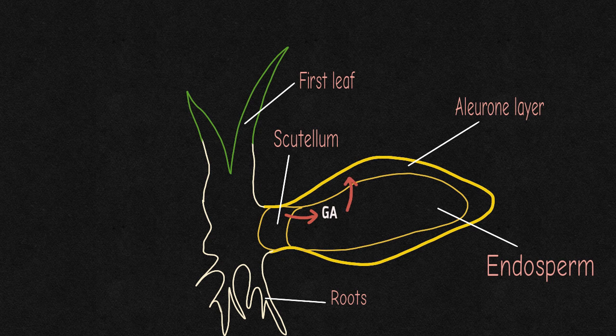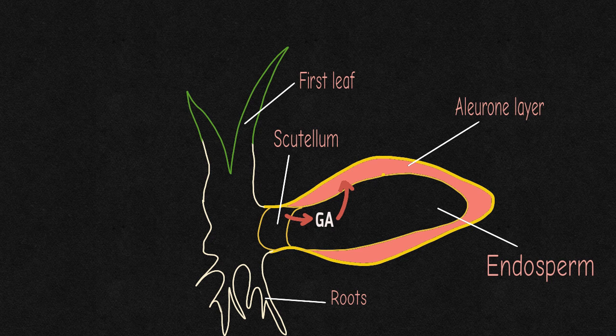There it promotes the synthesis of several hydrolytic enzymes. These are secreted into the non-living cells of the starchy endosperm, where starch and protein reserves are stored.